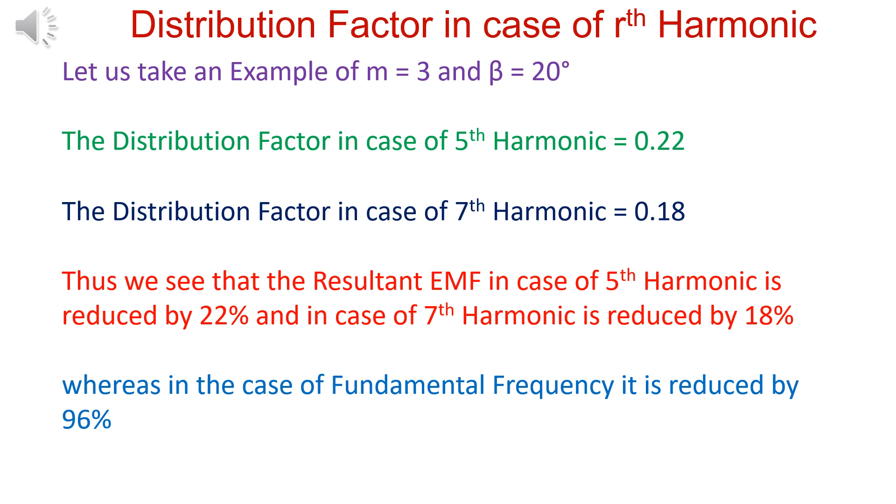In the example taken, distribution factor in case of fifth harmonic is equal to 0.22 and in seventh harmonic it is 0.18, whereas in fundamental it is 0.96.